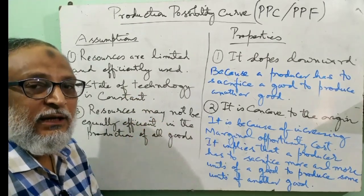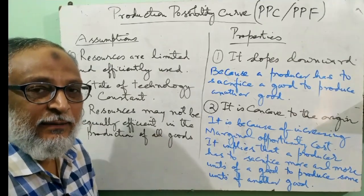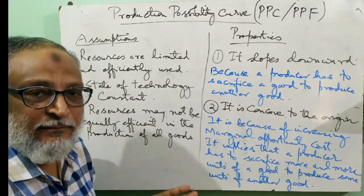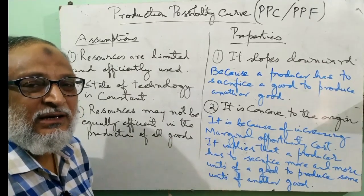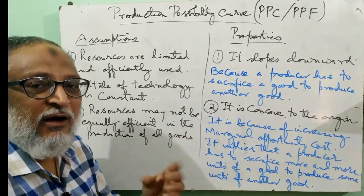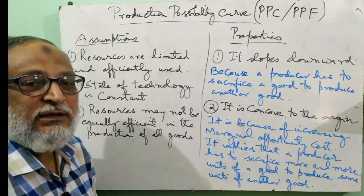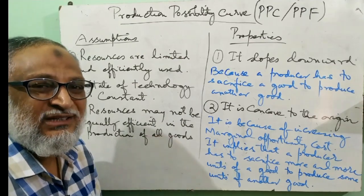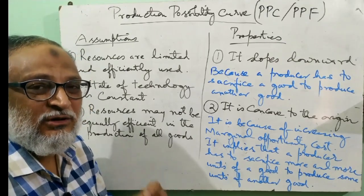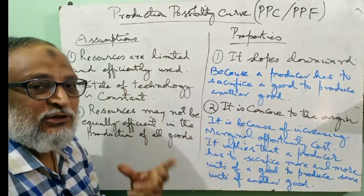On the other hand, consider a big farmer who has capitalistic farming and a large quantity of resources. He is using a tractor. Now if at one point he does not use all the land and only uses half of it, he still has to use his tractor. So that means the state of technology with the producer remains constant in the short period of time. Our PPC will show the possibilities of production when we assume that the state of technology is constant.